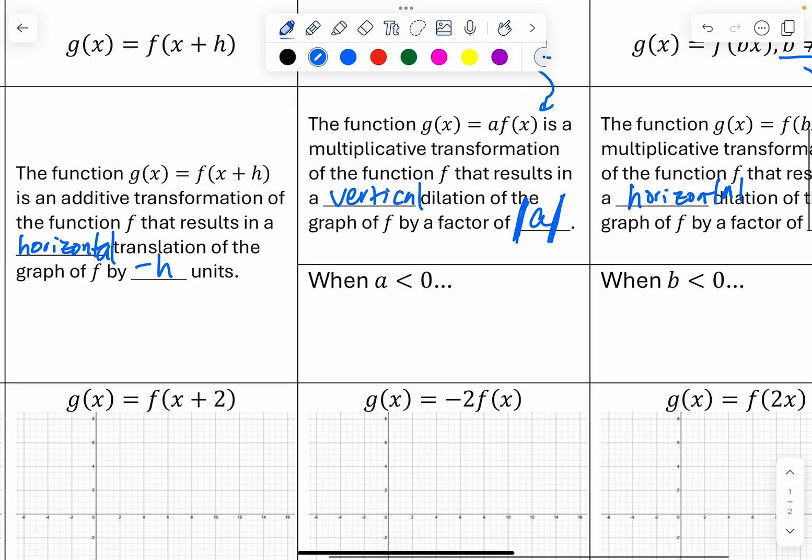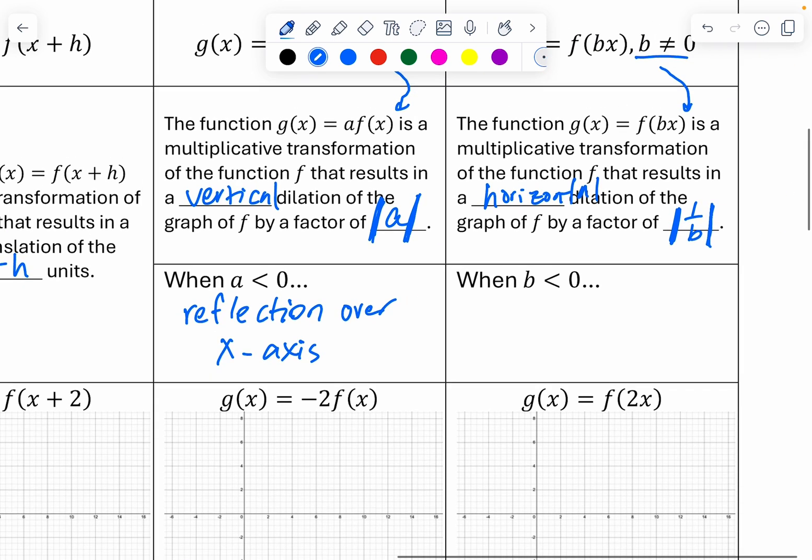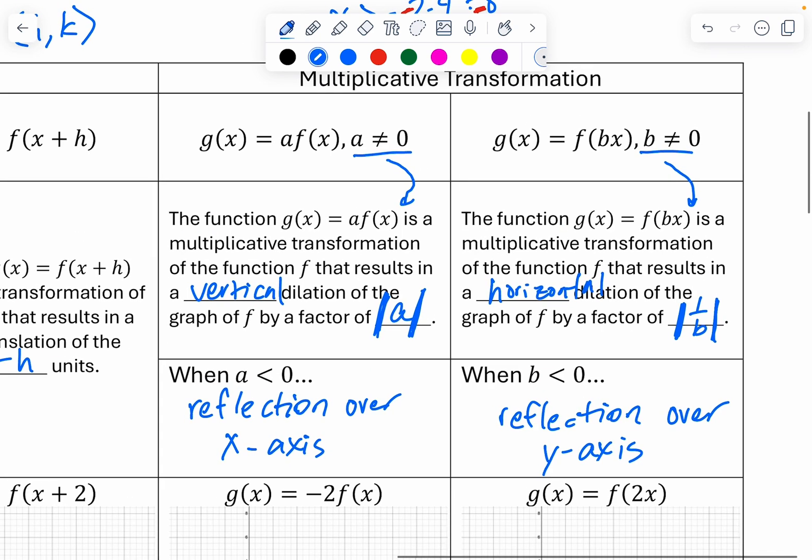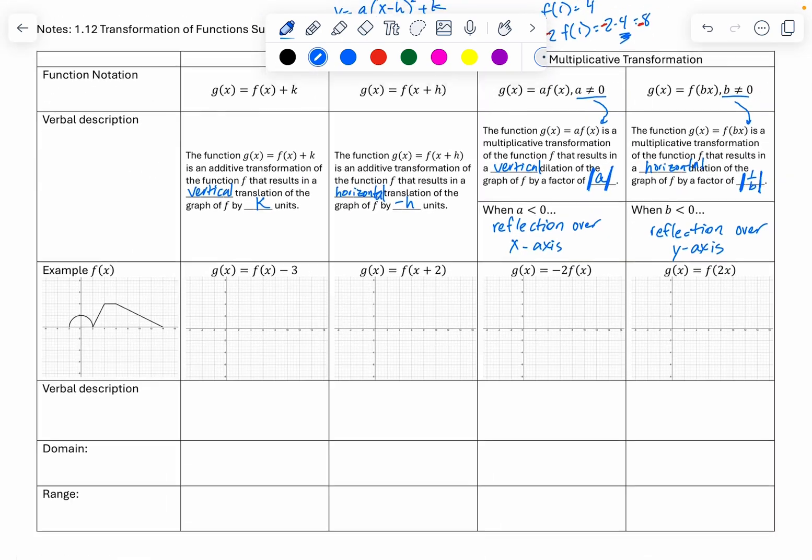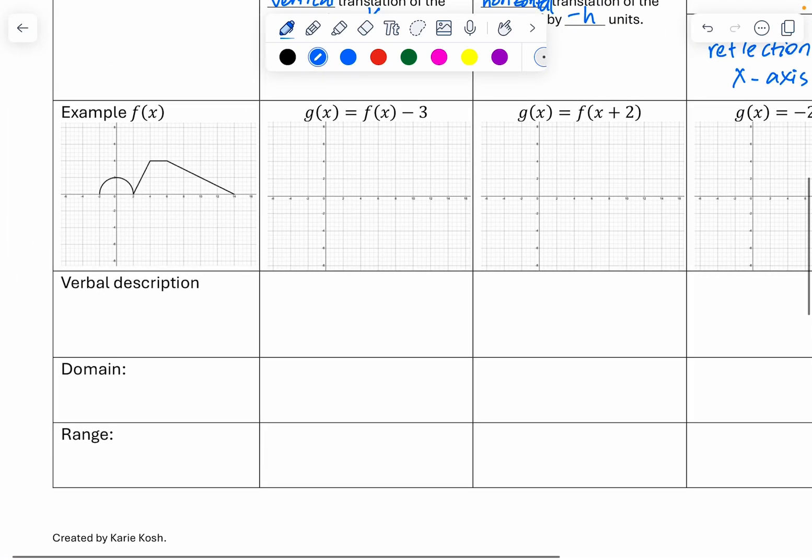When a is less than 0, we have a reflection over the x-axis. And when b is less than 0, we have a reflection over the y-axis. b will change our domain, a will change our range. b affects the x-axis, and so it could change the domain of our graph, which is why we're going to practice coming up with the domain and range for each of them.